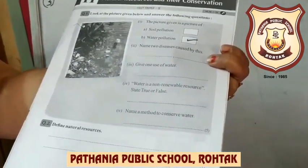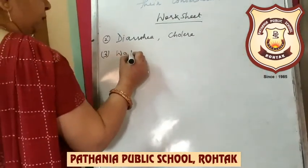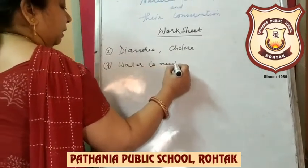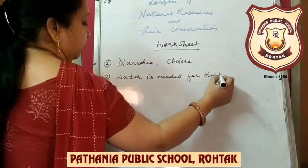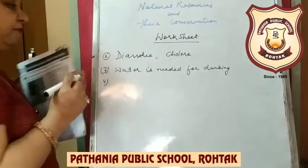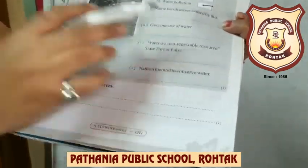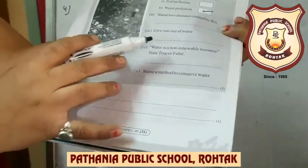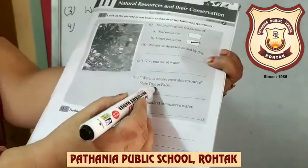Question number three: Give one use of water. Water is needed for drinking, so write 'water is needed for drinking.' Question number four: The statement says water is a non-renewable resource — but water is actually a renewable resource, so this statement is false.